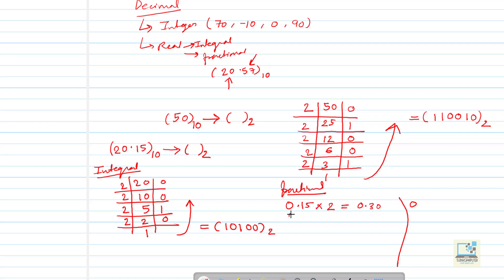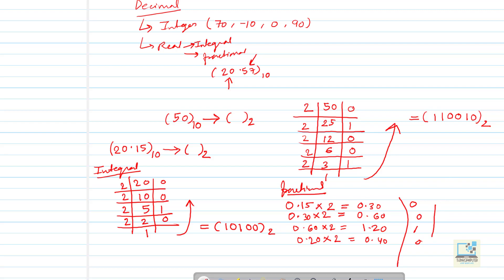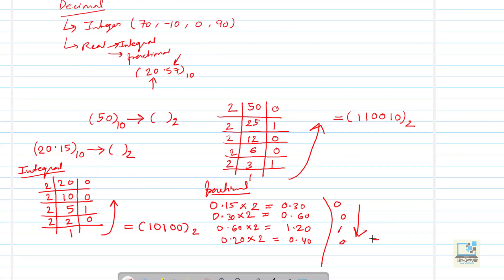Remaining value 0.30: 0.30 times 2 is 0.60 — integral part 0, take out 0. Then 0.60 times 2 is 1.20 — integral part 1, take out 1, bring down 0.20. Then 0.20 times 2 is 0.40 — take out 0. You can perform up to 5 steps or more. Reading top to bottom, the fractional part is .0010. The combined answer is 10100.0010 base 2.